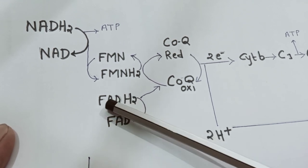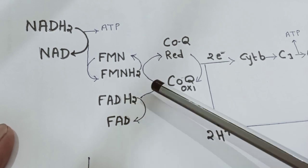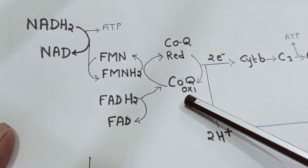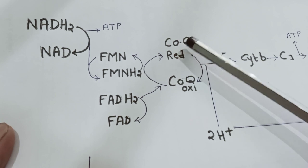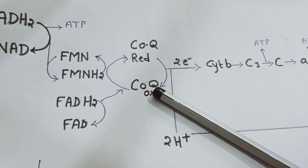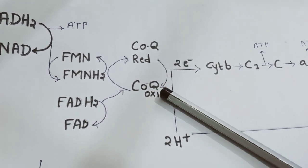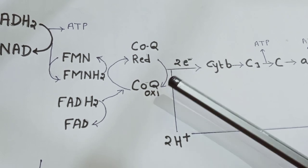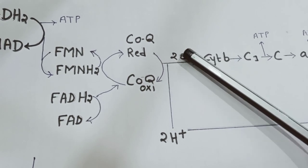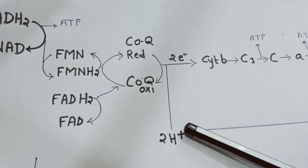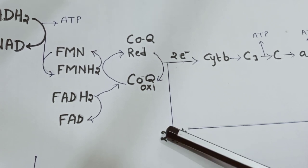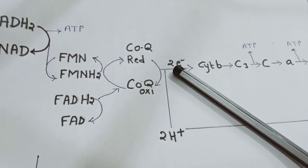There is another route through FAD, which converts to FADH2 and releases hydrogen. This hydrogen is also received by CoQ. The oxidized form of CoQ converts to its reduced form, and then back to its oxidized form. When it converts to its oxidized form, hydrogen is released and split into electrons and protons with the help of enzymes present in the F1 particle.